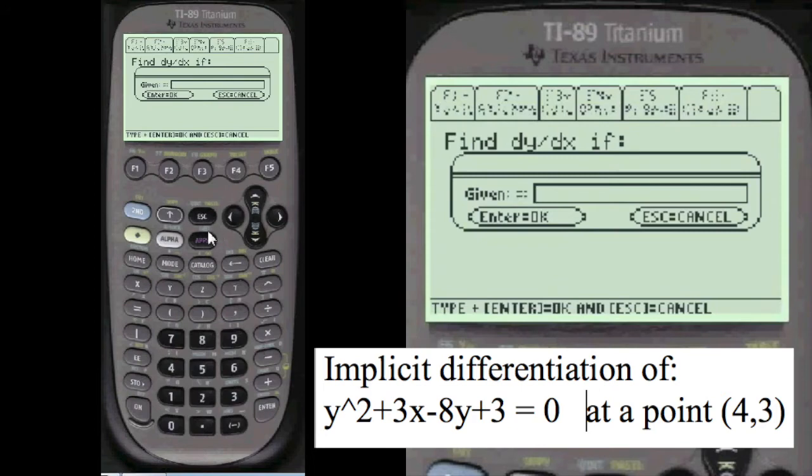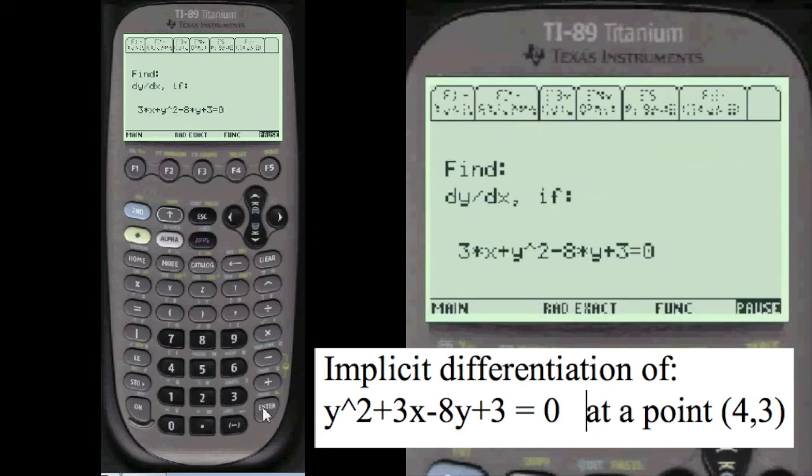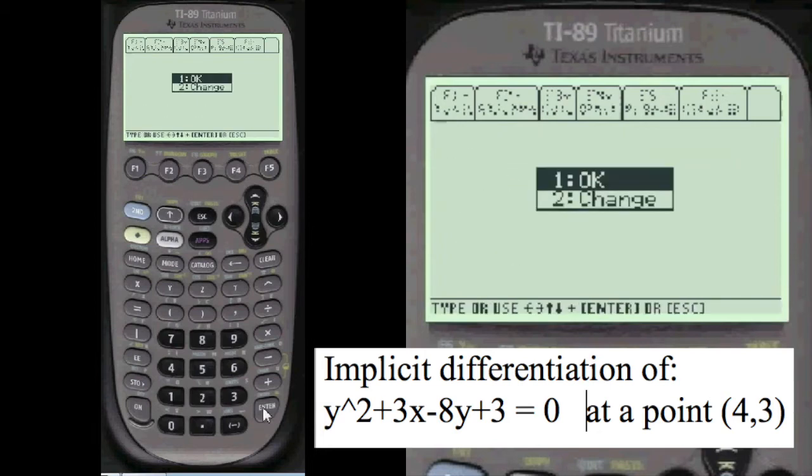I'm going to enter the function. You have to press alpha before you enter anything in these entry lines here. And the problem is alpha y squared plus 3 times x minus 8 times y plus 3 equals 0. I always show you what you've entered. You can change it if you want. I say it's okay.